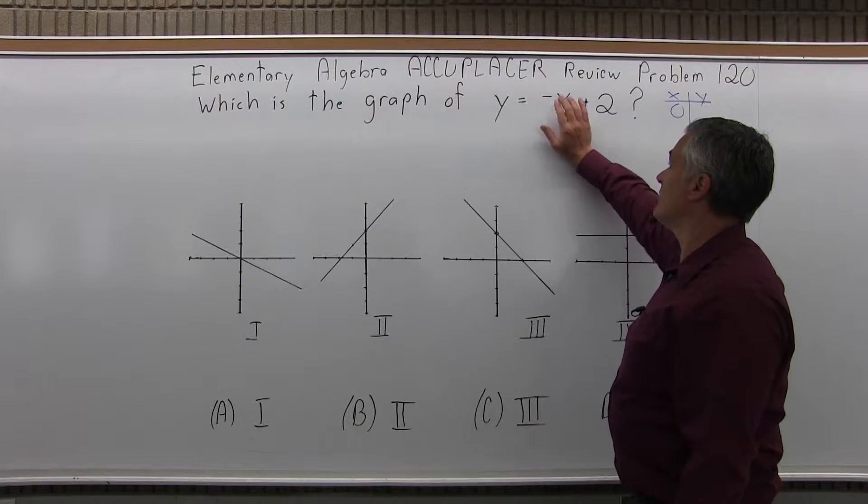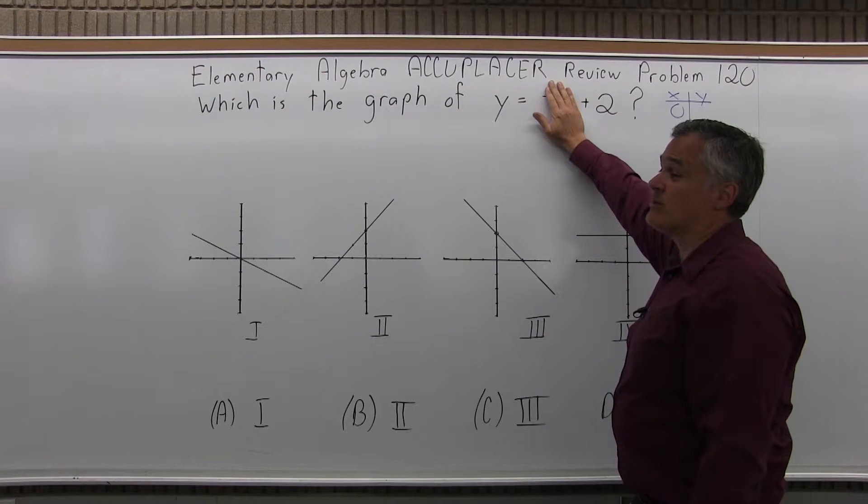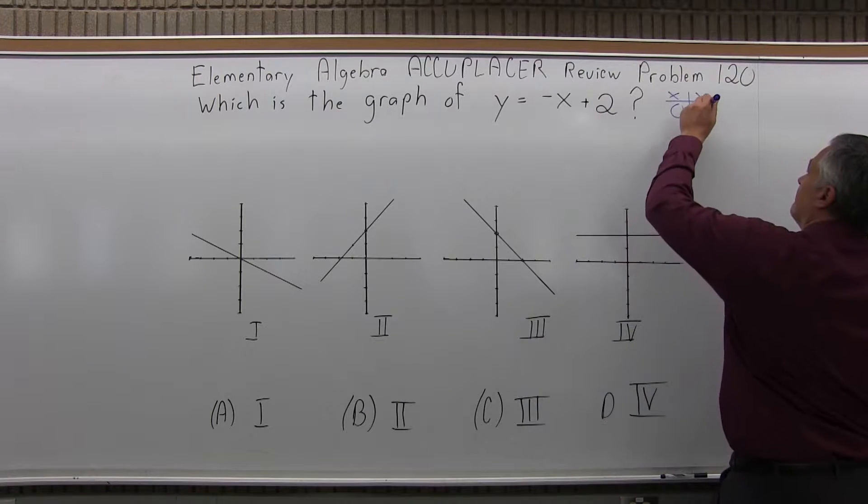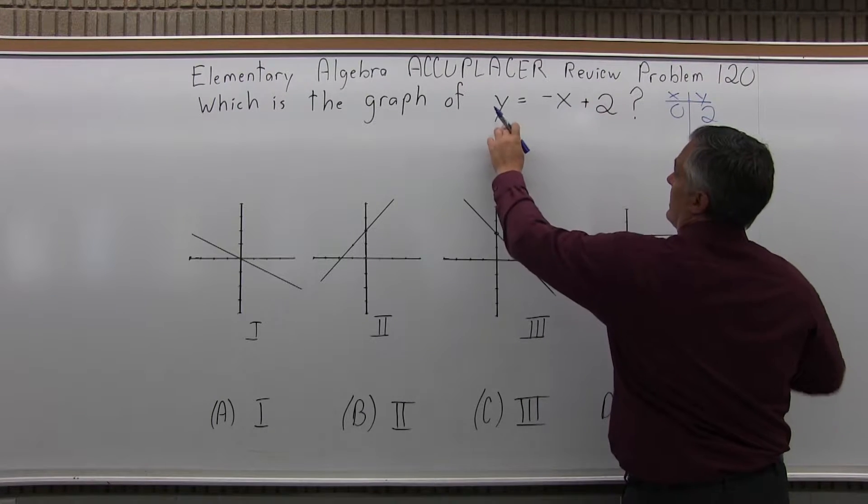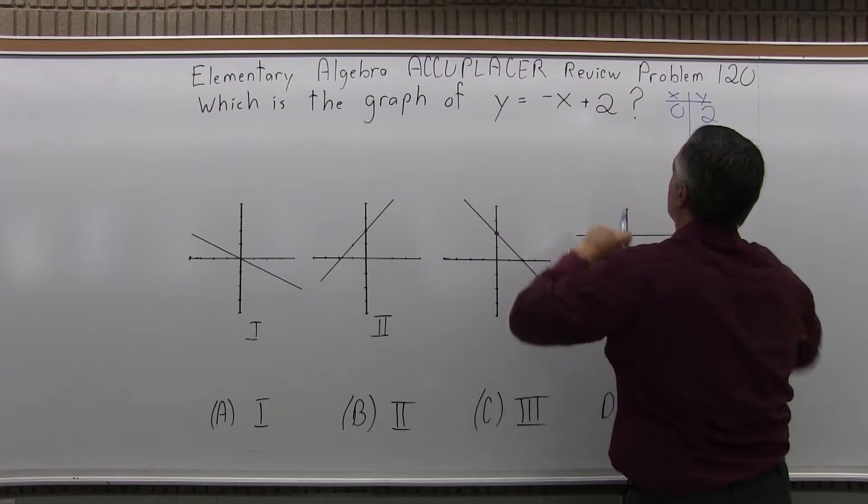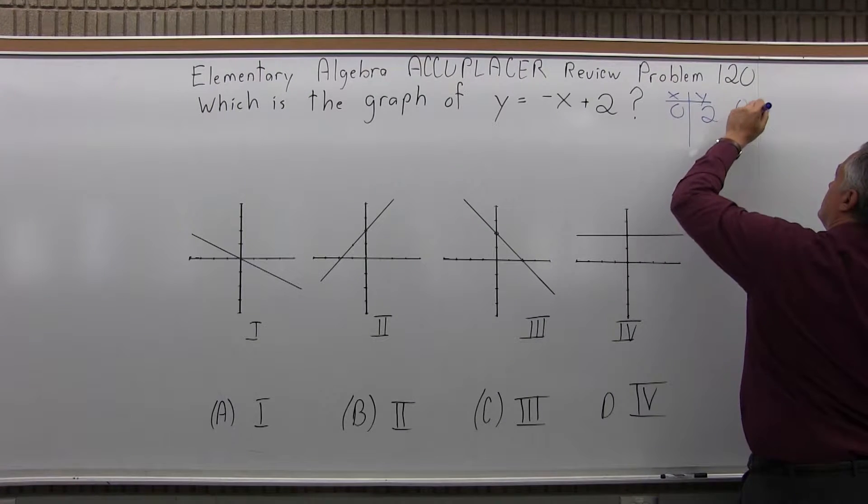So if I put in a 0 for x, the minus x becomes minus 0, I have y equals 2. So if x is 0 and y is 2, you get 2 equals 2. It makes the equation true. So one point is (0,2).